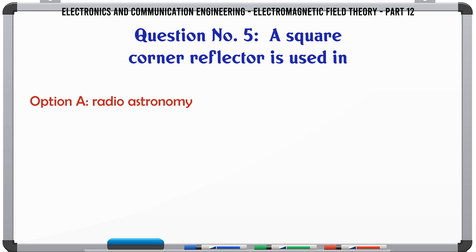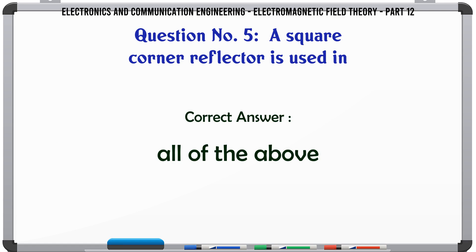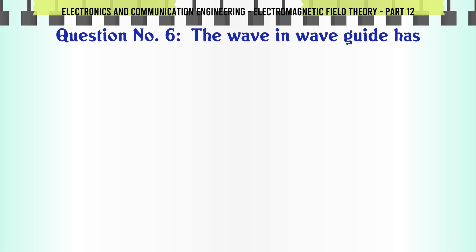C. Electric field intensity E and displacement, D. Electric potential V and displacement. The correct answer is Displacement density D and displacement. A square corner reflector is used in: A. Radio astronomy, B. TV broadcast, C. Point-to-point communication, D. All of the above. The correct answer is All of the above.